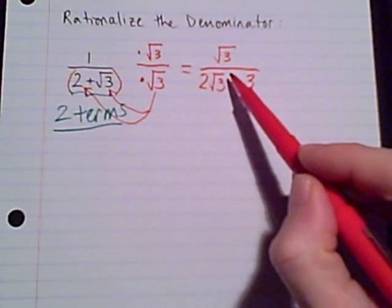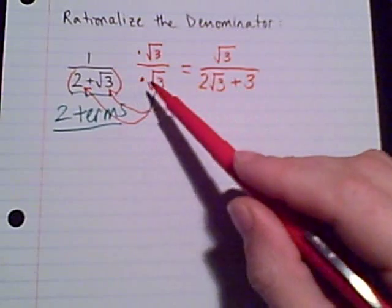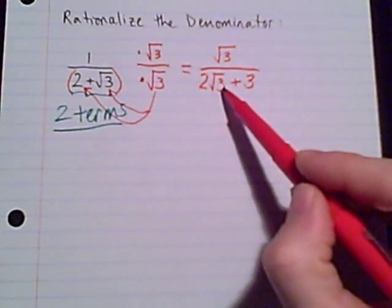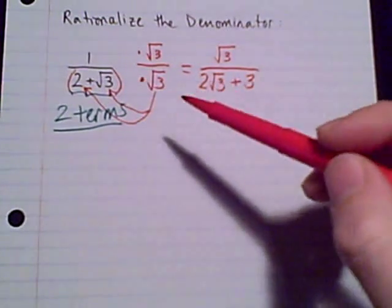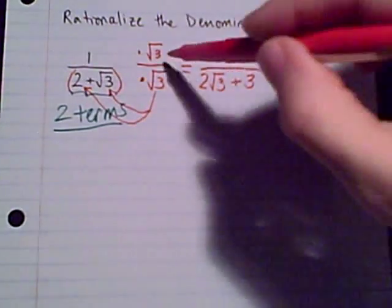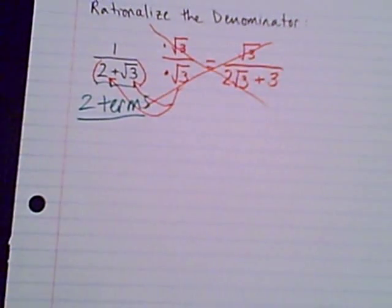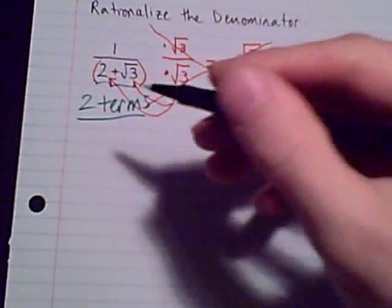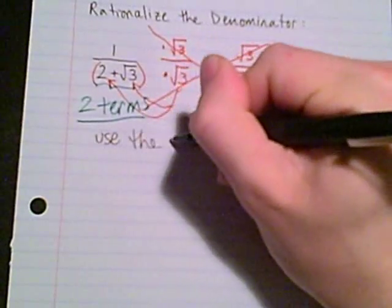It created a new radical in a different spot. So it didn't take care of the problem for us, it just moved the radical around. It was here, and now it's there, and if I multiplied by radical 3 again, it would move from there back to this side. So that's why when there are two terms, just multiplying by one radical 3 does not work. We did the multiply, and our result still has a radical in the denominator. So with two terms, we need to use the conjugate. To rationalize the denominator, when the denominator is two terms, use the conjugate.